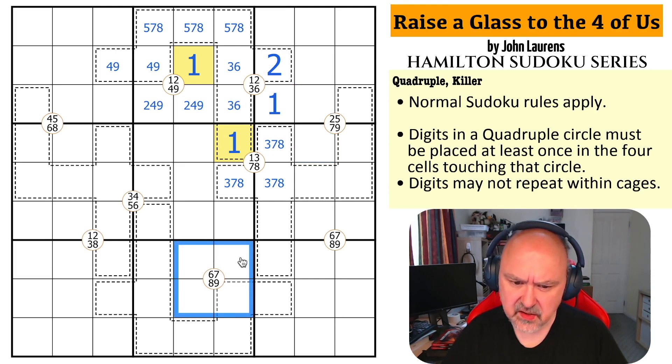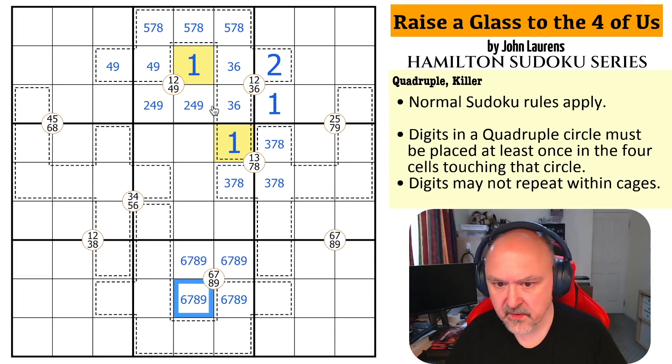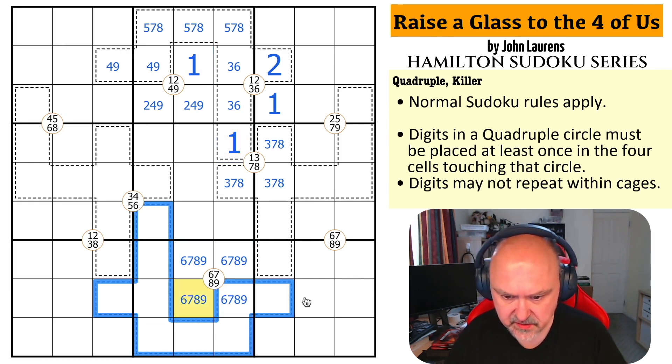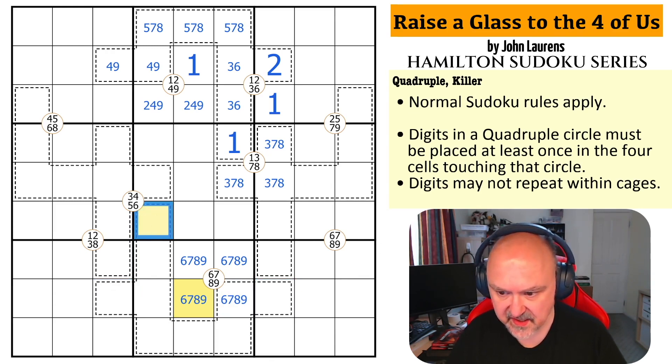This is 6, 7, 8, 9. Oh, this is a similar trick. Where does this cell go in this cage? And, it's the same trick. It can't go in the same box. And, it can't go in the same row. So, this is the same as this cell. But, this is 3, 4, 5, 6. And, this is 6, 7, 8, 9. So, these have to be the 6.